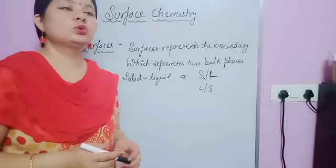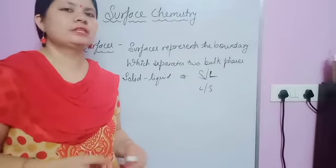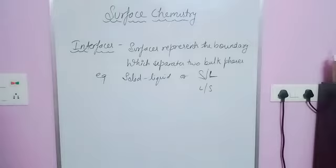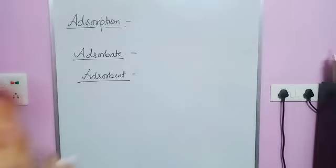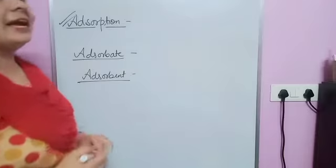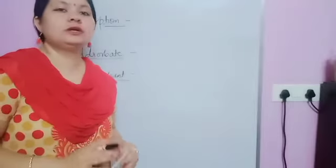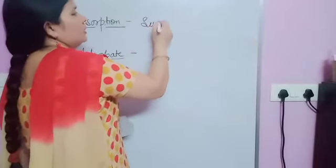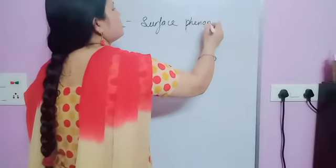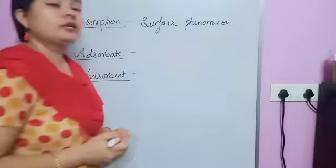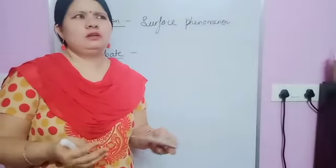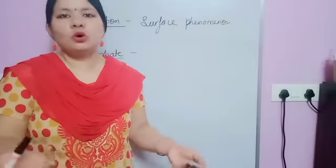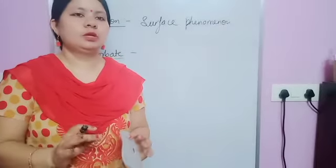In this chapter we have to study two or three important terms: adsorption, adsorbate, adsorbent, occlusion, and desorption. You have seen so many examples of adsorption in day-to-day life — maybe you know them or maybe you don't, but you are familiar with all the examples. Let's start with some examples.